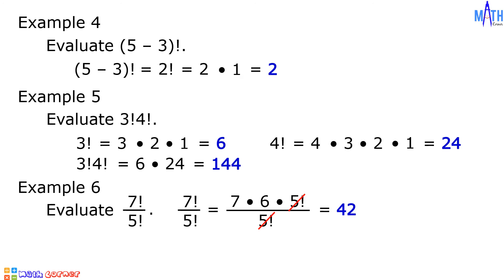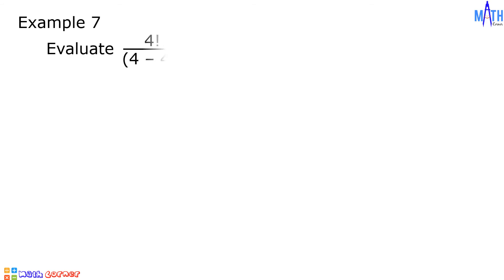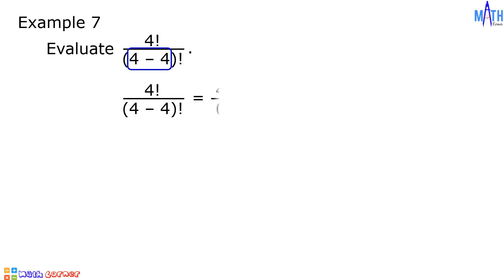Example number 7: evaluate 4 factorial over quantity 4 minus 4 factorial. Since 4 minus 4 is 0, this becomes 4 factorial over 0 factorial. 4 factorial is equal to 24, and 0 factorial by definition is equal to 1. Therefore, 24 divided by 1 is equal to 24.